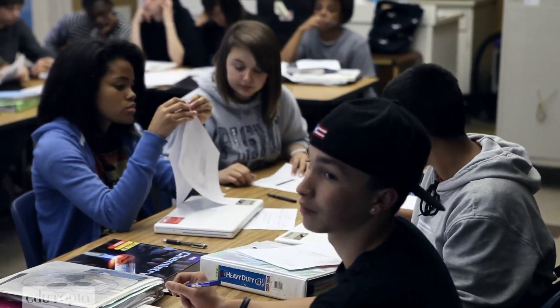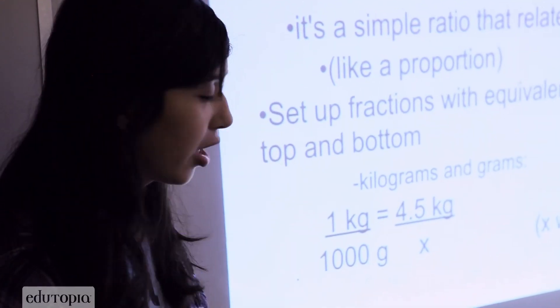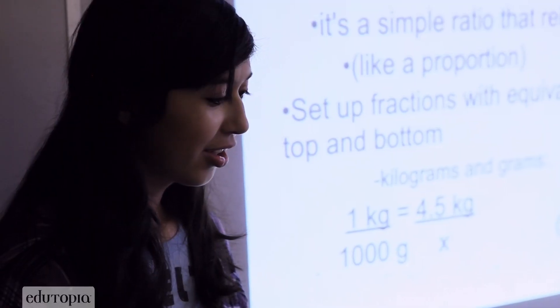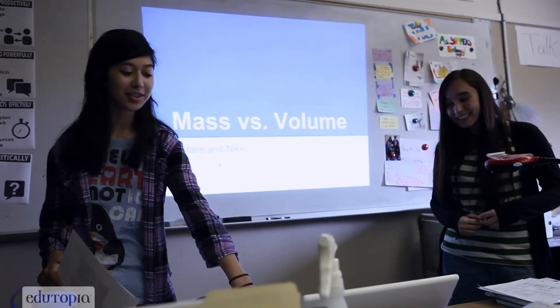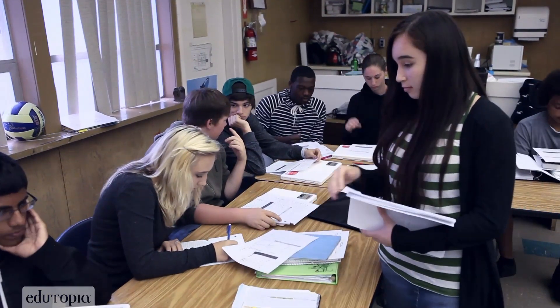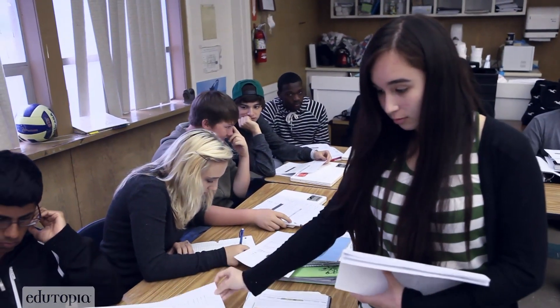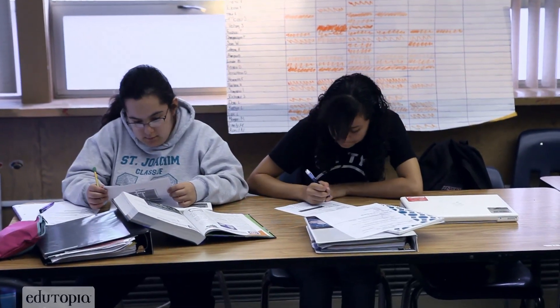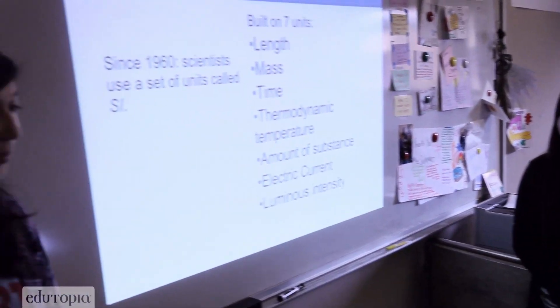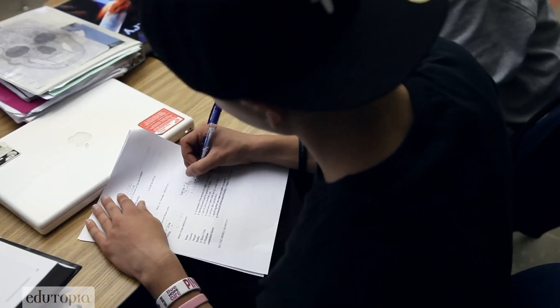It's higher stakes. Today, Natalie and Nikki presented on the different SI units — kilograms and stuff like that. If you're trying to find out how much 4.5 kilograms is in grams, you would set up a proportion like this. They gave students guided notes with key points and fill-in-the-blanks so students can follow along. Since 1960, scientists have used a set of units called SI. They also did one practice problem as a class and then had additional practice problems for students to work on.